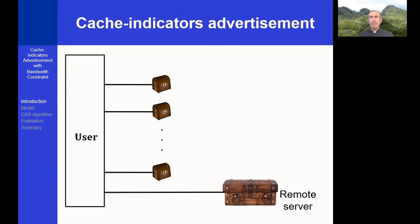Network caching is a fundamental building block in multiple networking environments. Commonly, a user is equipped with one or more caches. If the user fails to retrieve the requested datum from a nearby cache, then it has to access a remote server, thus causing a high cost in terms of delay, energy, and bandwidth. To help the user deciding which cache to access, each cache periodically advertises an indicator, which is a compact data structure that represents the list of items currently stored in the cache.